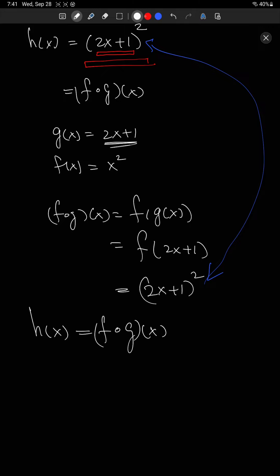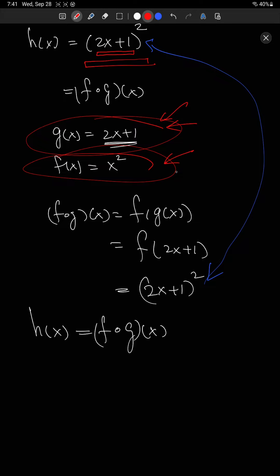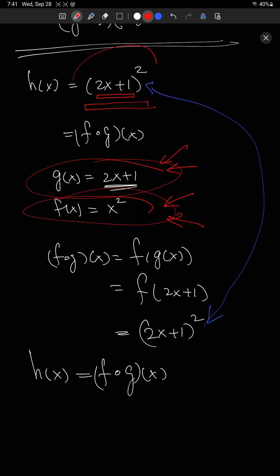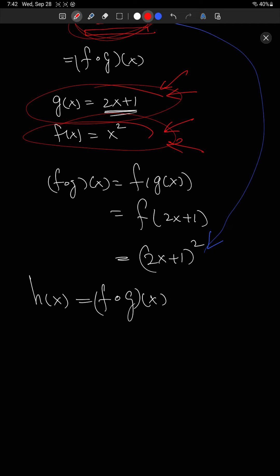I can always check my answer: f after g of x equals f of g of x, which is f of 2x plus 1 — the instructions for g — and then f squares it: 2x plus 1, whole thing squared. Is this the same as what I started with? Yes. So we've effectively broken h of x into two simpler functions. g of x is just a simple line, f of x is just a simple parabola, whereas h of x is much more complicated. This breakdown allows me to study f and g separately, and combining their study allows me to understand h.